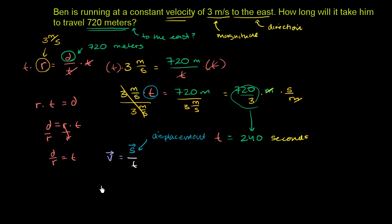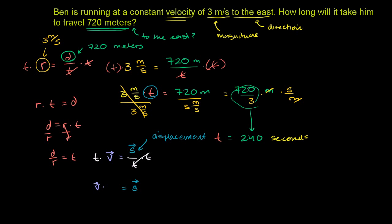Solving for time: multiply both sides by time, then divide both sides by velocity, giving time equals displacement divided by velocity. Applying that here: our displacement is 720 meters to the east, our velocity is 3 meters per second to the east. So time equals 720 meters east divided by 3 meters per second east.